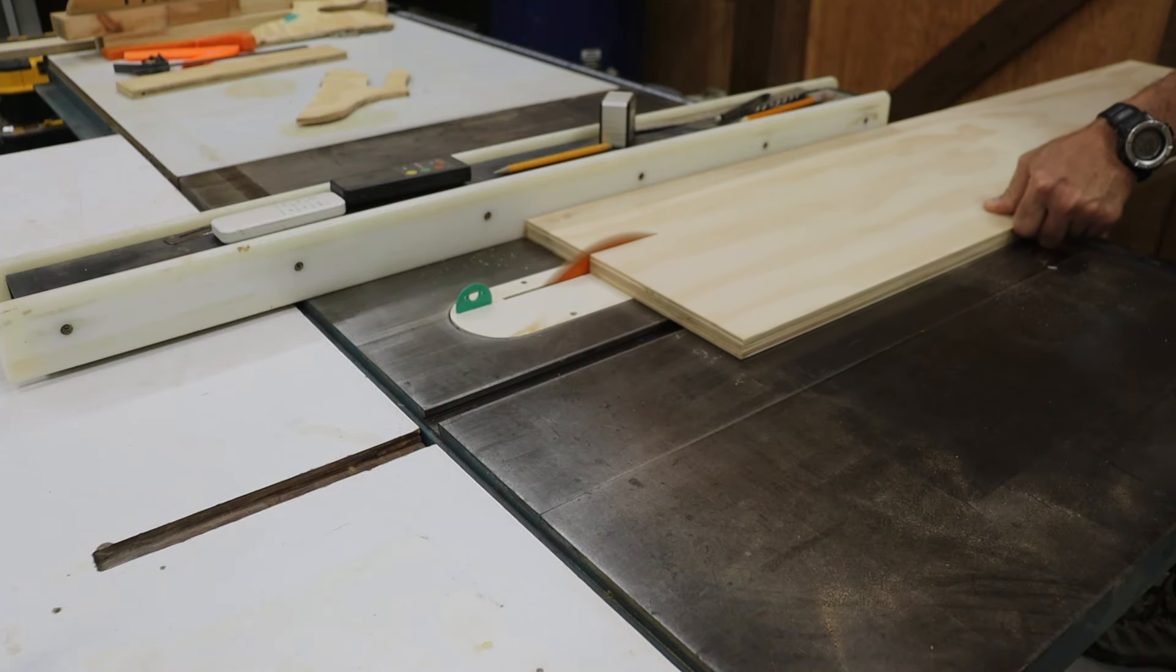Next, I'm going to start on the zero clearance fence. So I'm going to take some 3/4 inch ready pine, and I'm just going to rip it to a width of 4 inches here at the table saw. Here at the miter saw, I'm going to cut it down to a length of 29 inches. Then I'm going to do a little test fit here at the miter saw just to make sure that it's at the proper length.